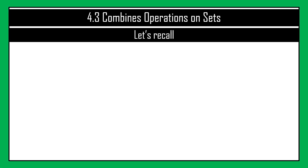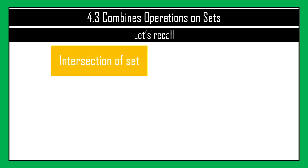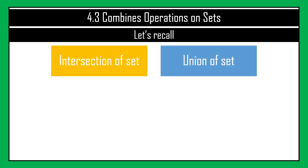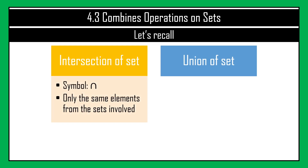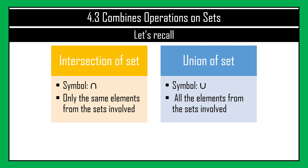Before we carry on, let's recall what we have learned so far in this lesson. We know that there is intersection of set and union of set. The symbol for intersection looks like a reverse U, and it means only the same elements from the sets involved. For union of set, the symbol looks like the letter U, which represents all elements from the sets involved.